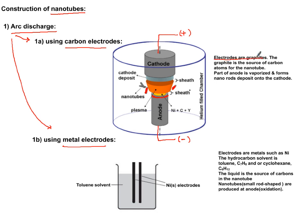The electrodes are made out of graphite. Graphite is the source of the nanotubes, and part of the anode vaporizes to form those nanotubes.